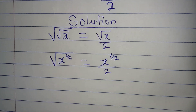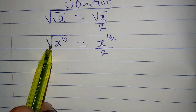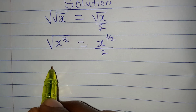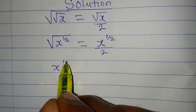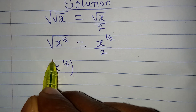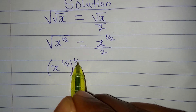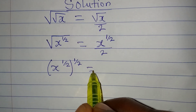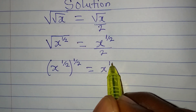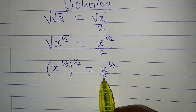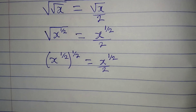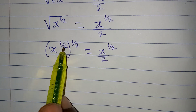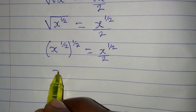We are having another square root outside again, so this means we are going to have x to the power of 1 over 2, to the power of 1 over 2, because of the bigger square root. And this will be equal to x to the power of 1 over 2 divided by 2.